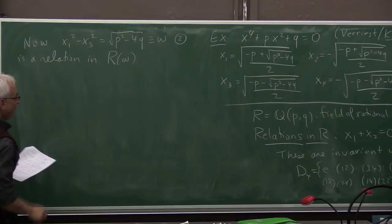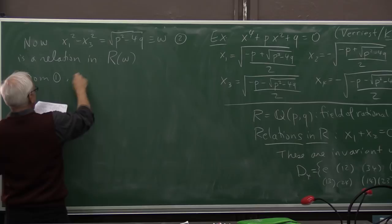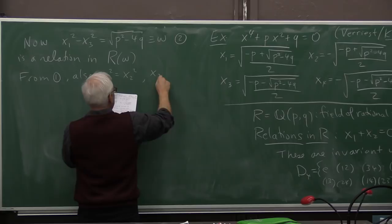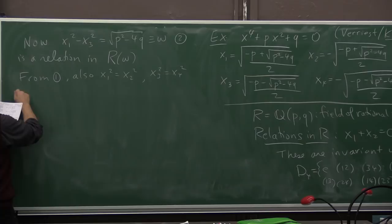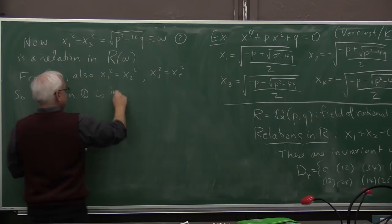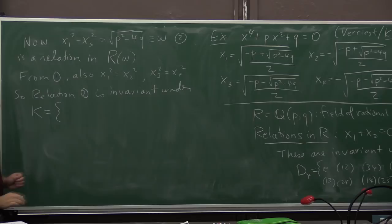All right. But from relation 1, from our relation over there, x1 is equal to minus x2. We also know that x1 squared equals x2 squared and x3 squared equals x4 squared. That's essentially what we've already observed. So relation number two is invariant under which permutations?